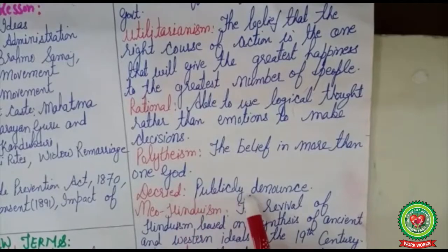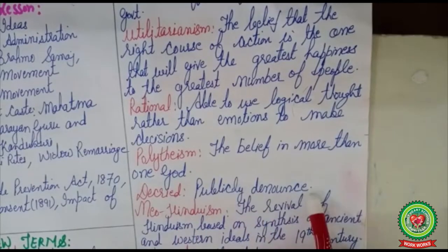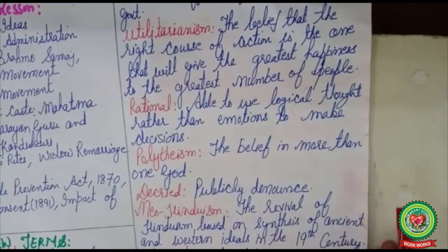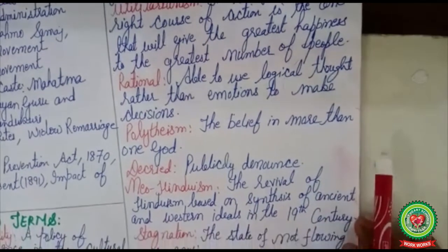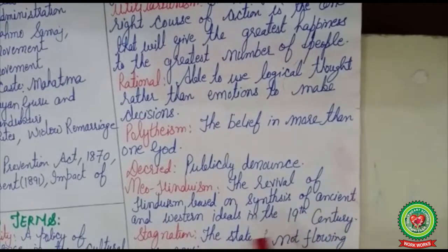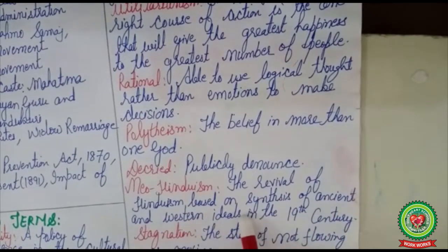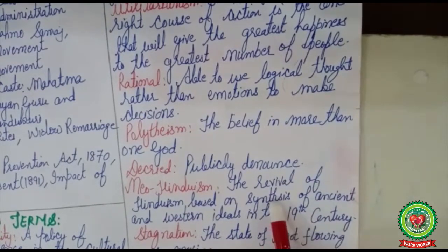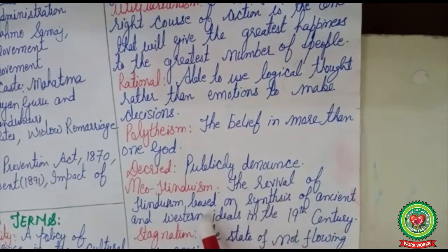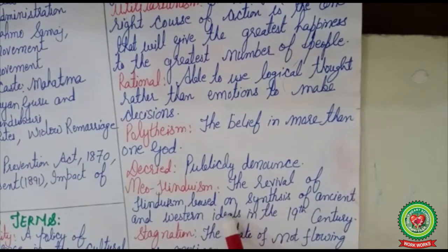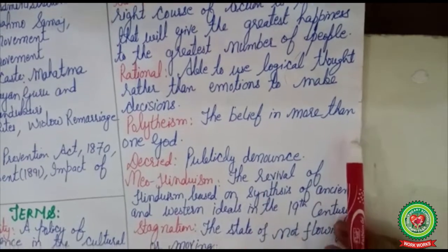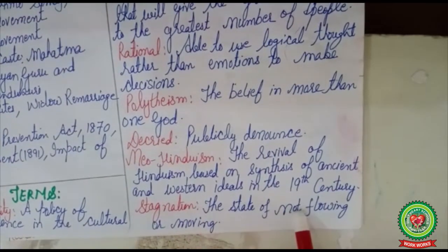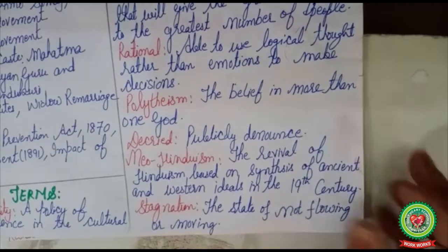Decried: publicly denounced. Neo-Hinduism: the revival of Hinduism on the synthesis of ancient and western ideals in the 19th century — here synthesis means the joining of ancient and western ideas. And the last term, stagnation: the state of not flowing or moving.